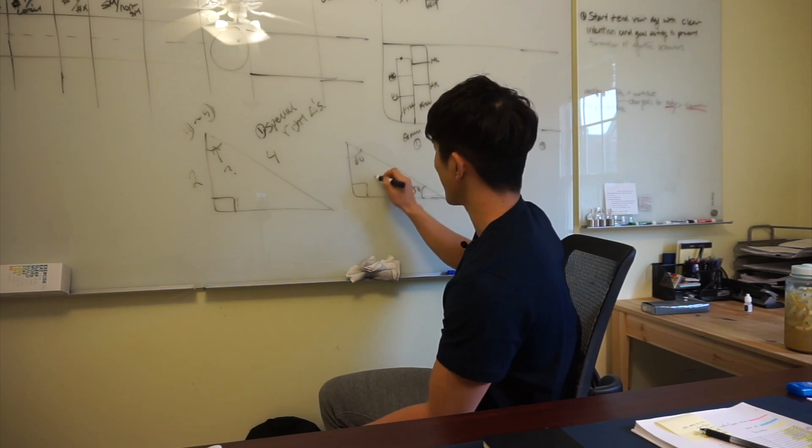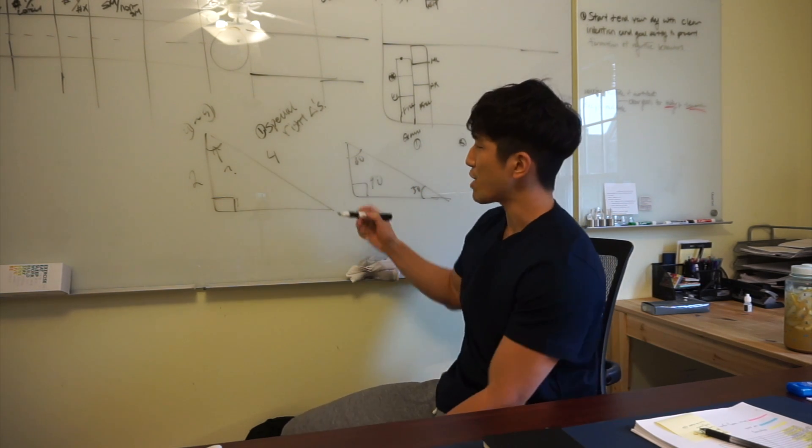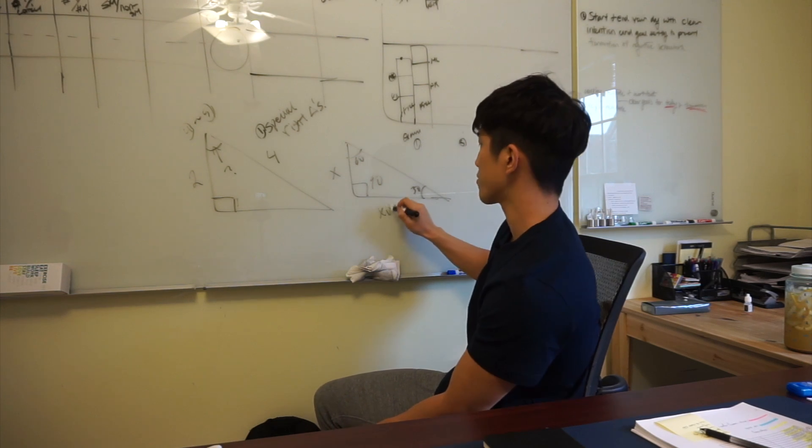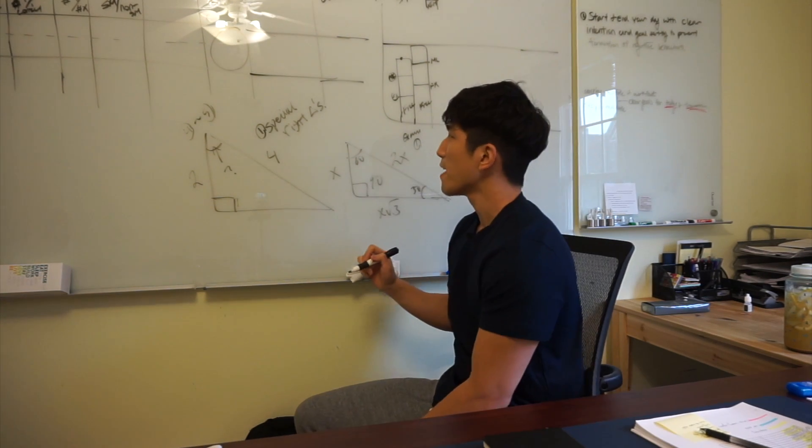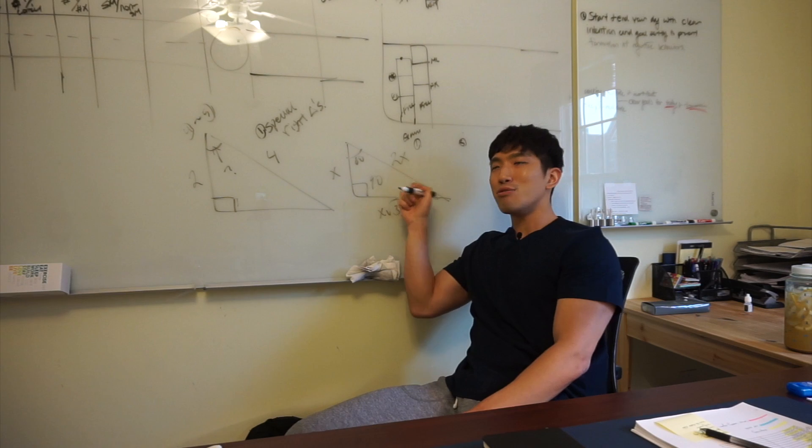let's say this is 30, let's say this is 60, and this is 90, and the side length ratios are x, x root 3, and 2x, right? So, that is the constant you would need.